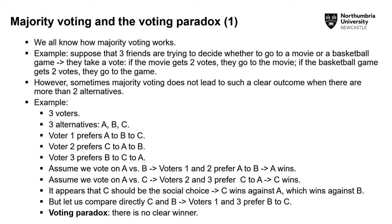Ideally, the preference of the majority should prevail. For example, let's say you have three friends deciding whether to go to a movie or a basketball game. The decision is easy: if one option receives two votes and the other one, all three friends attend the one that achieves the majority of votes. However, the problem is that the outcome is not as clear when there are more than two alternatives.